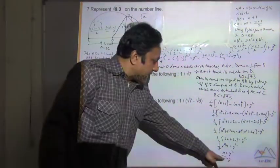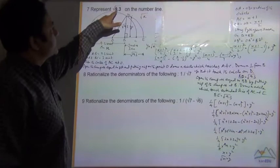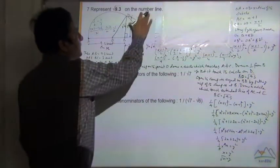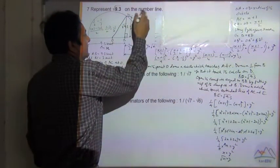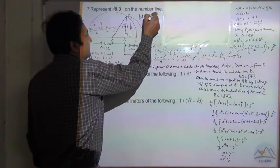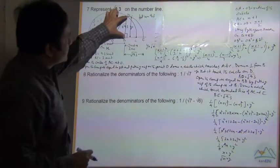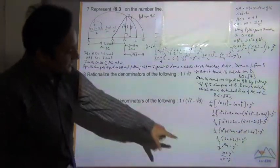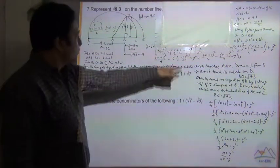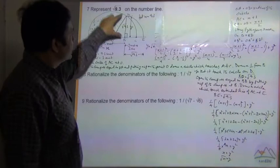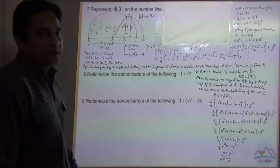Here our x is equal to 9.3, so this distance y is equal to under root 9.3. This is the proof that BD and BE are equal to under root 9.3.